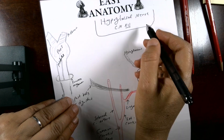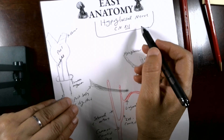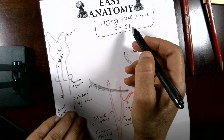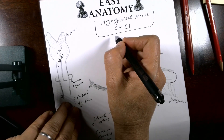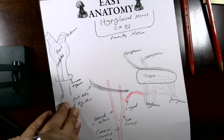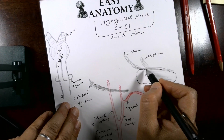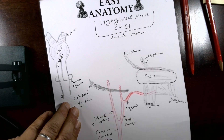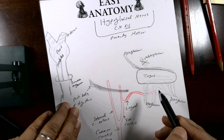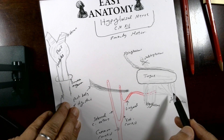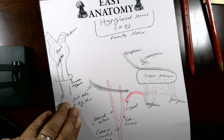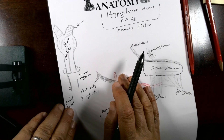Welcome to Easy Anatomy. I'm going to talk about the anatomy of the hypoglossal nerve, cranial nerve number 12. To start, the hypoglossal nerve is purely motor, supplying all muscles of the tongue — both intrinsic and extrinsic — except the palatoglossal muscle. So it supplies the styloglossal, hyoglossus, genioglossus, and intrinsic muscles of the tongue.